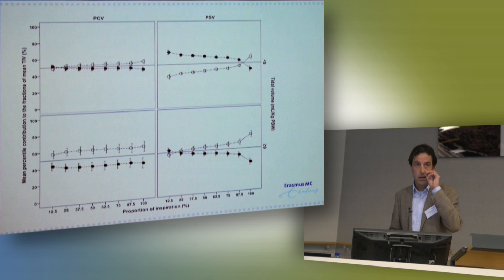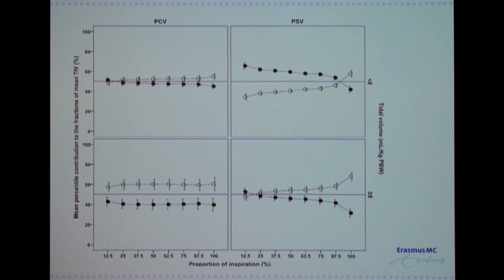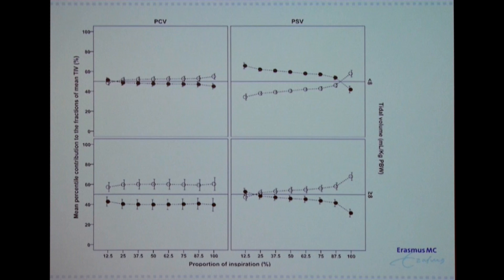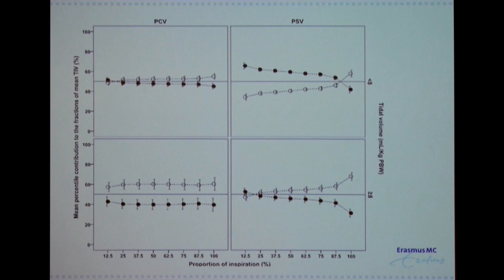We also used the same technique to see the difference between pressure control ventilation and pressure support ventilation — patients with tidal volumes below 8 mL/kg versus above 8 mL per kilogram body weight. With pressure support ventilation, most ventilation goes to the dorsal, dependent part, related to diaphragm activity — as Leo showed with the mice — with most displacement on the dorsal side. When you increase the tidal volume due to too much assist level, this volume also goes into the ventral side, giving a more even distribution compared to low tidal volume.